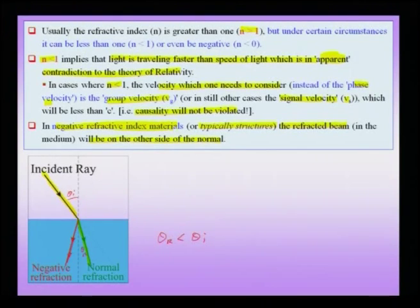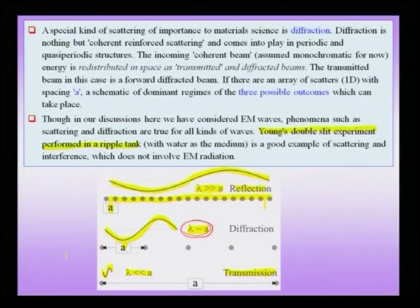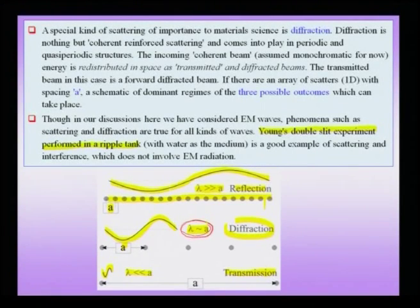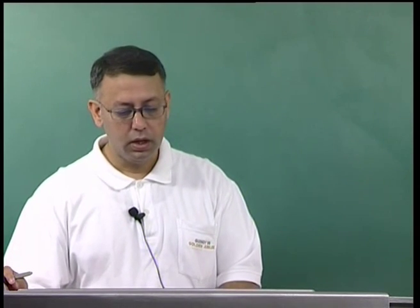Interesting materials known as negative refractive index materials exist, where the refracted beam lies on the same side of the normal as the incident ray. When an electromagnetic wave interacts with a crystal — a periodic array of point scatterers — there are three possible outcomes: reflection, diffraction, and transmission. All three may happen simultaneously; even when reflection dominates, some radiation is transmitted with a lambda-to-the-power-4 dependence.